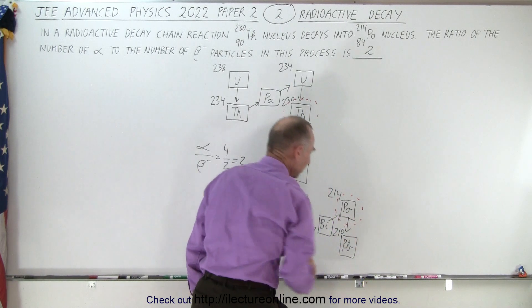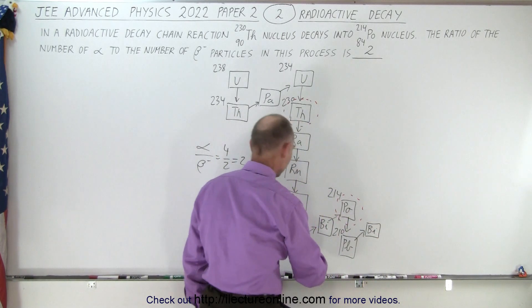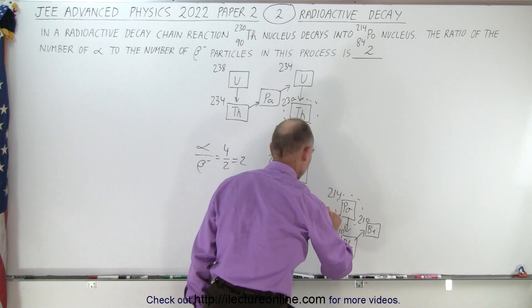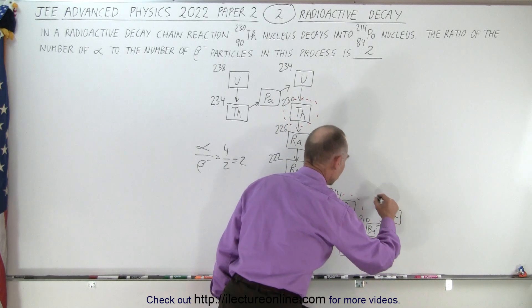So then there's another beta decay that gets you back to bismuth, but this bismuth is going to be bismuth-210. Another beta decay to polonium, but this polonium is 210, that's not the one they wanted, so that's too far.